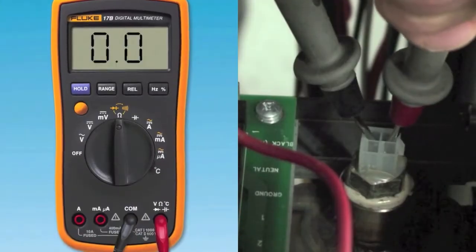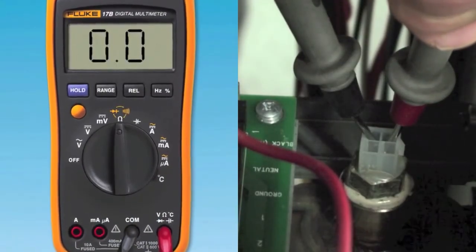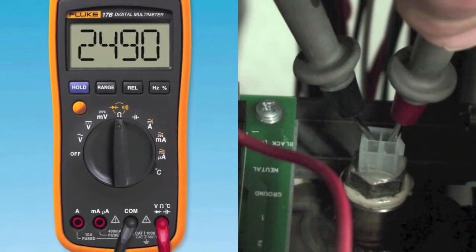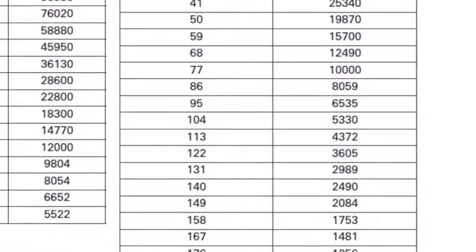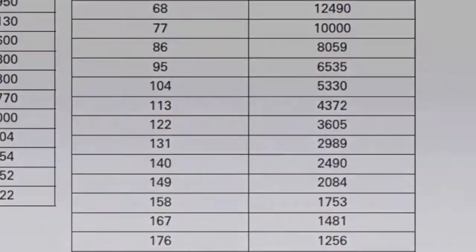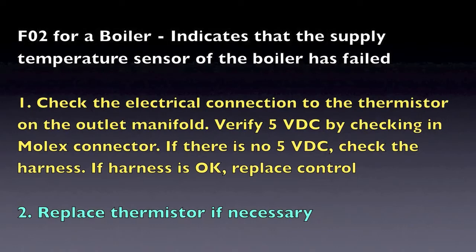If you read zero, this means that the sensor is shorted. If you are getting a reading other than zero, check this reading against the chart within the manual to assure that the sensor is measuring a correct value based on a given temperature.